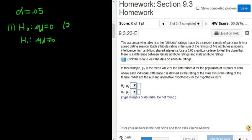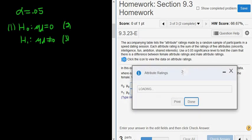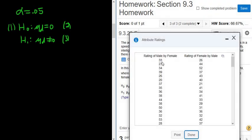And now we can go to StatCrunch to get the test statistic, which is step 2, and the p-value, which is step 3. So what we do is we click on this, and then here we have the attribute ratings.